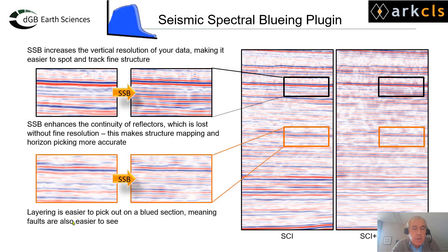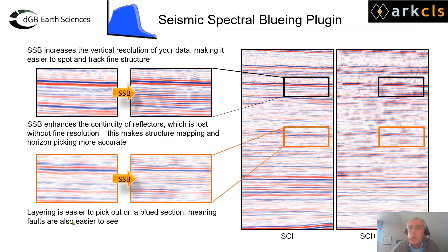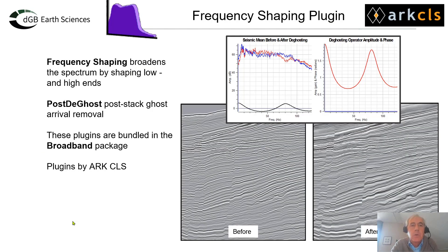Spectral bluing: we are increasing the higher frequencies at the expense of the lower frequencies, and that brings out all kinds of details. Going from left to right, we see the increasing number of seismic reflections and all kinds of detail, also if we compare seismic colored inversion and the spectral bluing on the right. And then frequency shaping — changing the frequency on both sides of the spectrum — and also removing the ghost effect by application of the post-decoast plugin, creating a broadband type of seismic image: on the left before and on the right after.